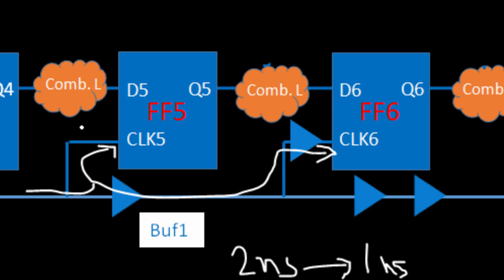These are your options when fixing a hold violation. Similarly, if you have to fix a setup violation, instead of decreasing the skew you increase it. To increase the skew, you can remove a buffer from one path, or add one more buffer in another path. In this way you can fix your setup violation. So now you know how to fix hold and setup violations.